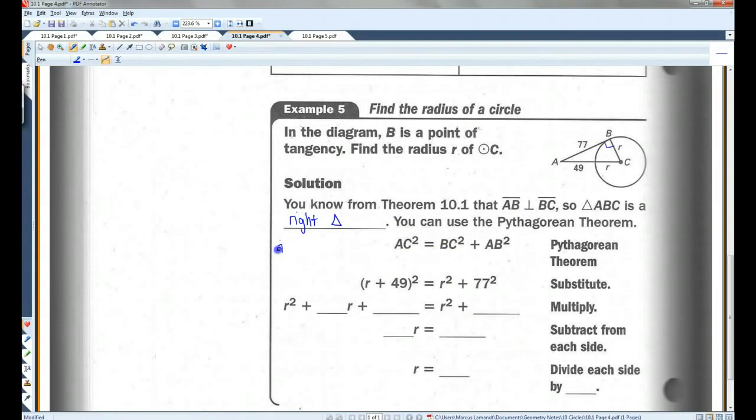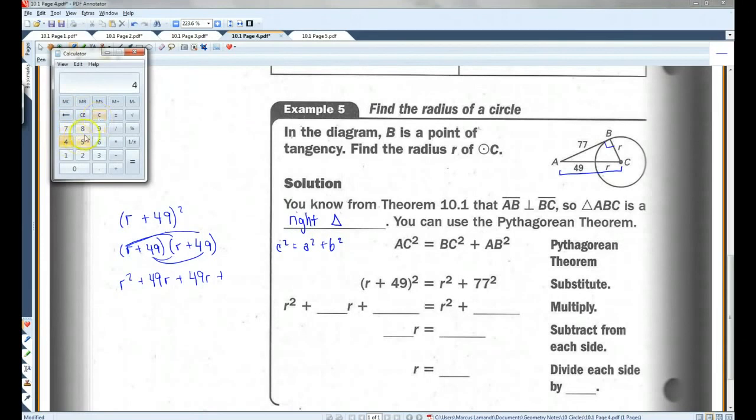I guess we could just do it over here. This is C squared equals A squared plus B squared. AC is R plus 49. That's the whole hypotenuse. BC is R. AB is 77. So this is where you're going to have to remember a few things from Algebra 1. R plus 49 squared is the same as R plus 49 times R plus 49. You're going to have to FOIL.